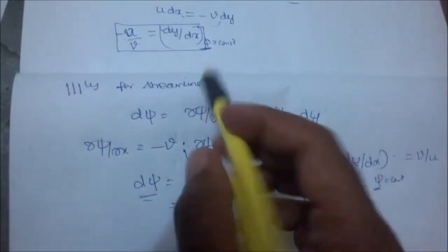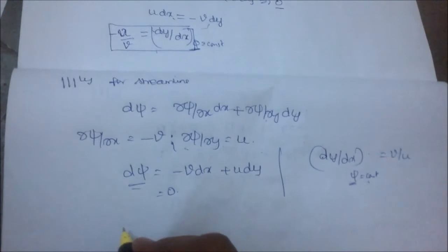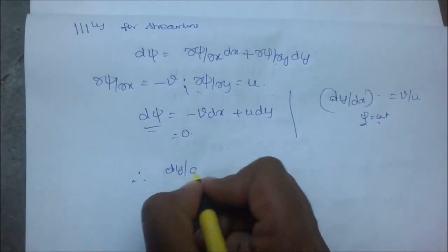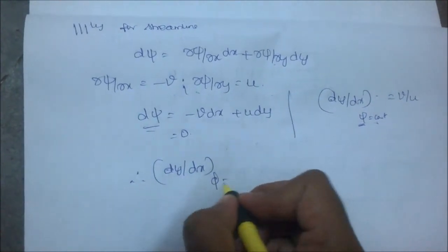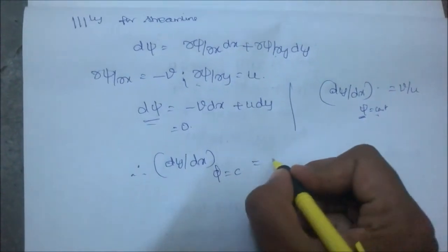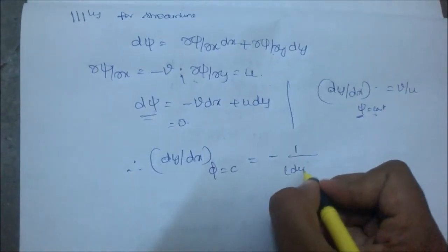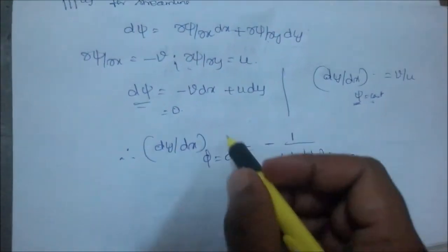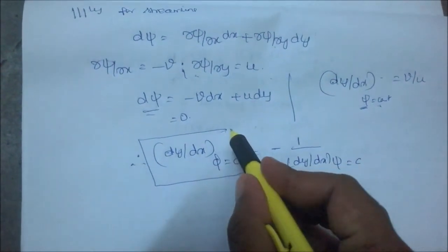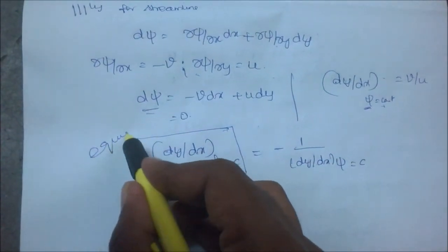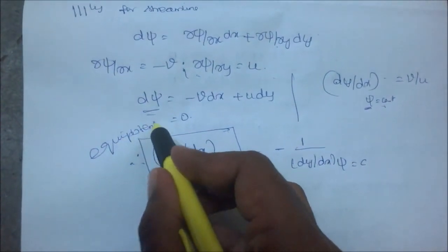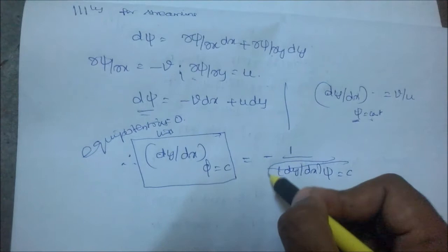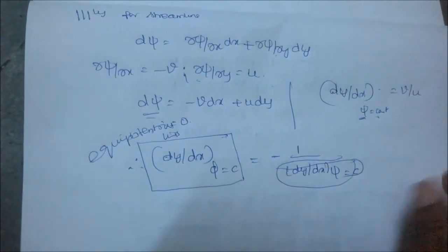Now with this equation, we can write (dy/dx) at constant φ equals minus 1 divided by (dy/dx) at constant ψ. We are going to call this equipotential lines, and this the streamline.